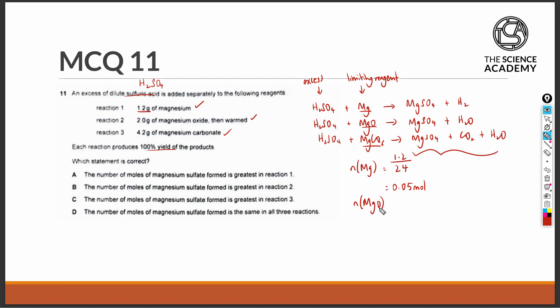The number of moles of magnesium oxide reacted in the second reaction is 2.0 grams divided by the molecular mass of MgO, which is 24 and 16, which will also give us 0.05 moles of MgO reacted.